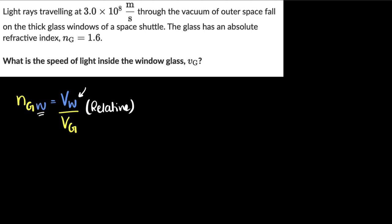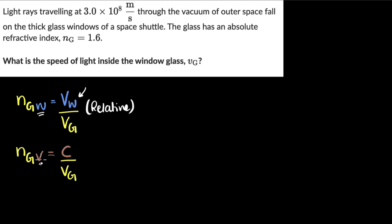Then what is absolute refractive index? You can also measure the refractive index of glass with respect to vacuum. That would be the speed of light in vacuum divided by the speed of light in glass. Again, whichever medium you're comparing relative to, that medium's speed comes on top. When you're comparing with vacuum, we just call it absolute. So remember, absolute means you're comparing with vacuum, and we often don't write it — it's understood.